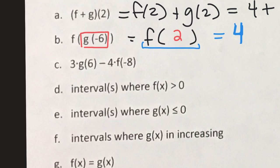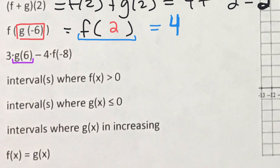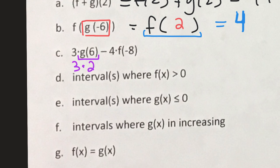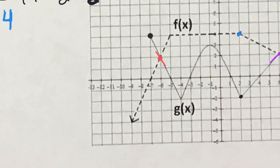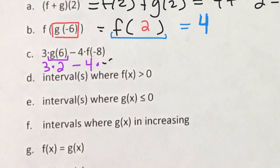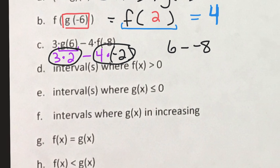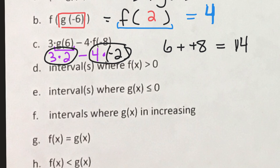This is a PEMDAS question: evaluate 3 times g(6) minus 4 times f(negative 8). Using the graph, g(6) equals 2 and f(negative 8) equals negative 2. We multiply before we add or subtract: 3 times 2 is 6, and 4 times negative 2 is negative 8. So 6 minus negative 8 equals 6 plus 8, and the answer is 14.